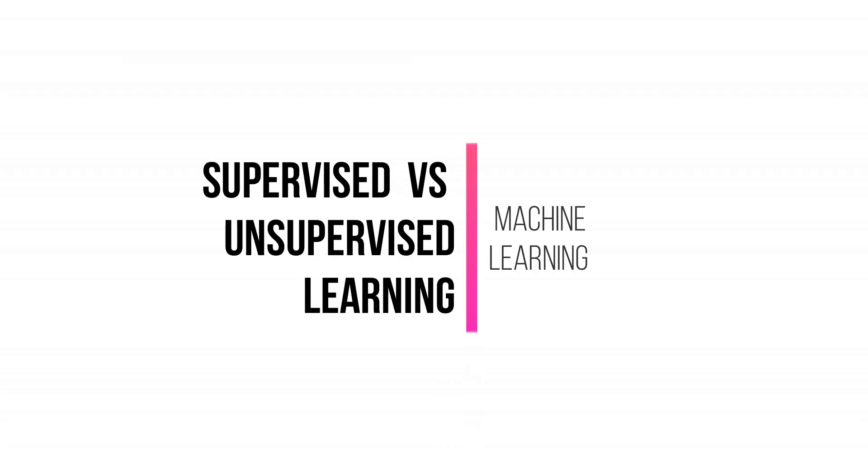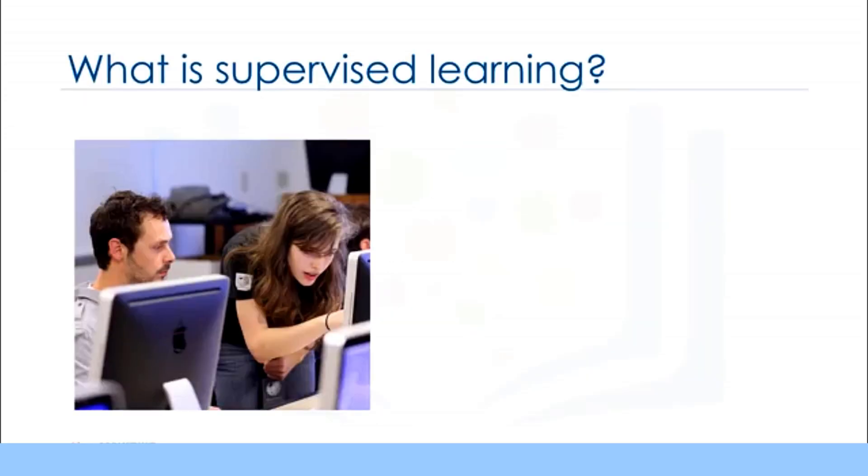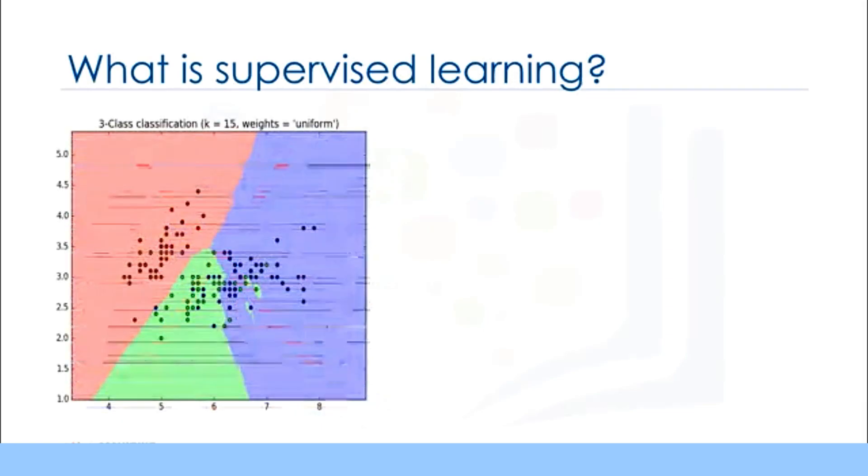An easy way to begin grasping the concept of supervised learning is by looking directly at the words that make it up. Supervise means to observe and direct the execution of a task, project or activity. Obviously we aren't going to be supervising a person. Instead we'll be supervising a machine learning model that might be able to produce classification regions like we see here. So how do we supervise a machine learning model?